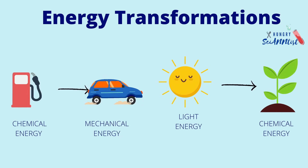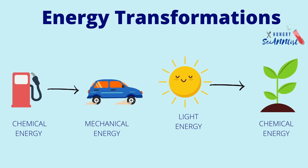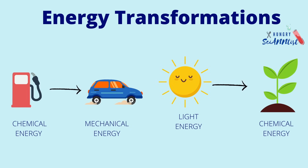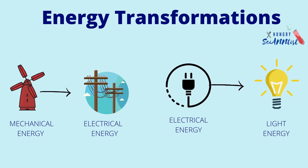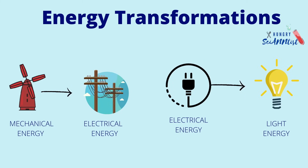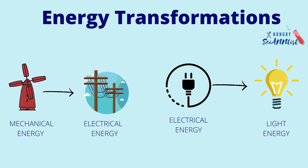Chemical energy from fuel is converted into mechanical energy. Light energy from the sun is converted to chemical energy through photosynthesis. Mechanical energy from a moving windmill is converted to electrical energy, which is then converted to light energy.